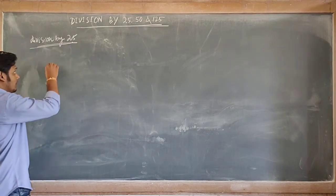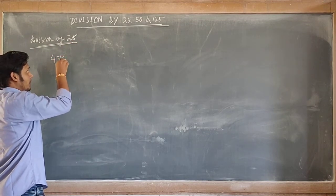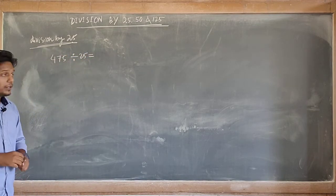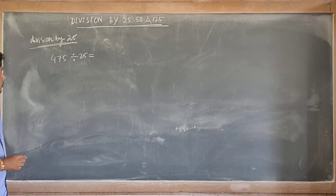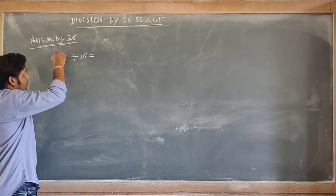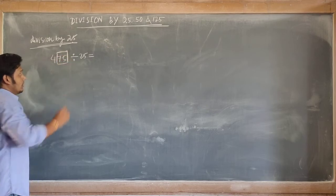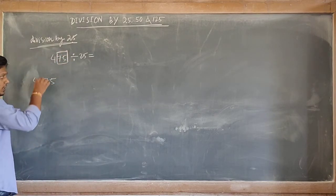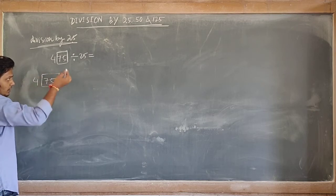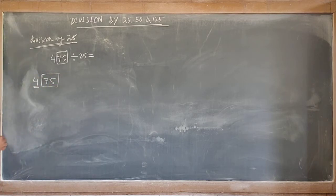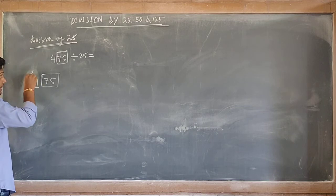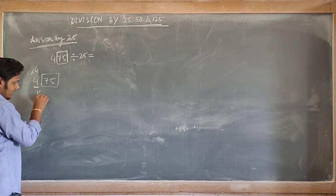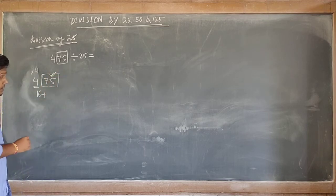Suppose any number — let's take 475 divided by 25. How will we get the answer within seconds? The last two digits always have to be separated from the left part of the number. Here 475 consists of 3 digits, so we separate the last two digits. You are left with 4, and the rest of the digits you multiply by 4, giving you 16.